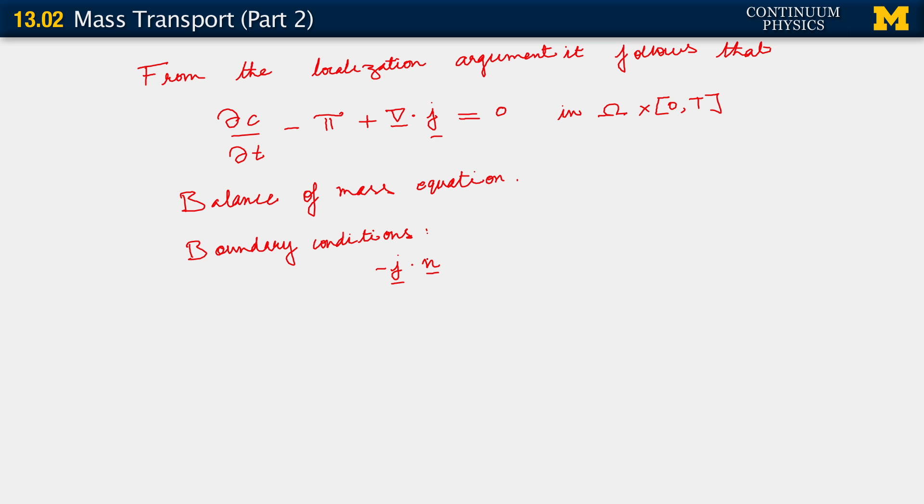It is that minus j dot n, which is the inward flux, the influx of particles on the boundary is equal to the specified number of particles per unit time per unit boundary area that we are sending in. This holds on the flux boundary subset. And on its complement, we have c of, if we like, x comma t equals c bar. Some controlled concentration, which is allowed to change with time.